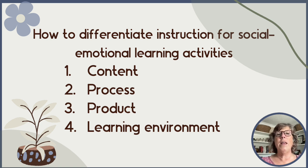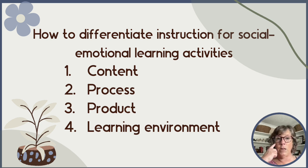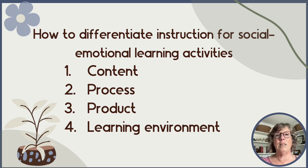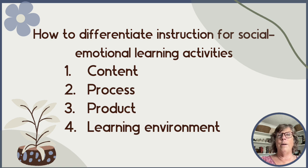Number one is content: what is the appropriate level of challenge for a student? If a student can't read the word 'cat,' we shouldn't have them on chapter books. Unfortunately, too often we stop at content and think our curriculum is differentiated, but there's more. Number two is process: does a student learn best visually, auditorily, or kinesthetically? Number three is product: how is a student best able to demonstrate their understanding? Some students prefer a test, but there are also Lego models, hanging artwork, games and activities, readers' theater — all sorts of ways that students can demonstrate their understanding.